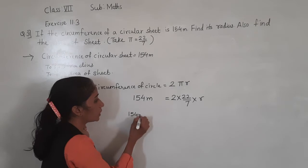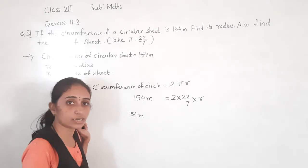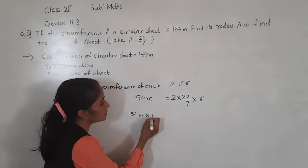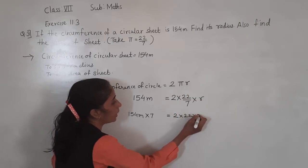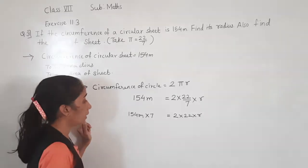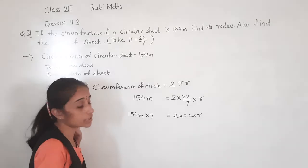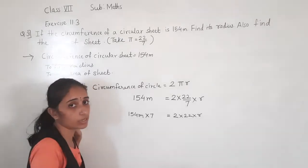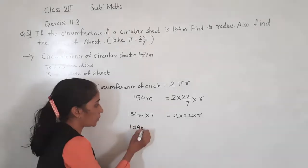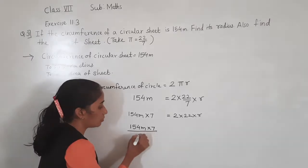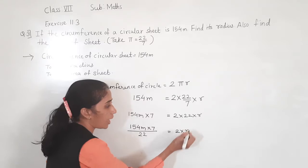So 154 × 7 = 2 × 22 × R. We transfer 7 to the other side — it becomes multiplied. Now transfer 22 to the other side — it becomes divided. So 2 × R remains on one side.